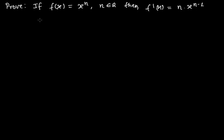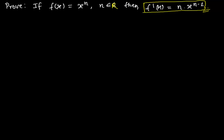Hi friends, welcome once again. We're going to prove a very nice formula for our derivative. The question is: prove that if f(x) = x^n, where n belongs to real numbers, then the derivative with respect to x equals n times x to the power n minus 1. This is a really wonderful result, and once proven, it will make it very comfortable to find the derivative of any function in this form.